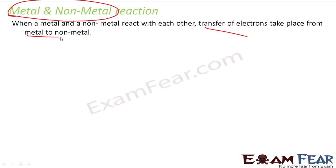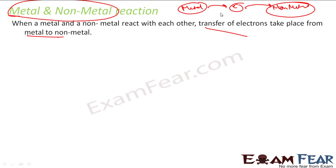Metal is ready to give electrons — metal wants to give electrons. And non-metal always wants to take those electrons. For example, sodium will try to give an electron to become Na+, and chlorine will try to take that electron to become Cl-. These are the stable states of sodium and chlorine, and they form a compound called NaCl.